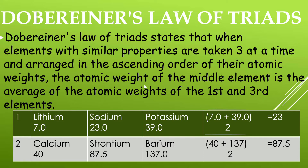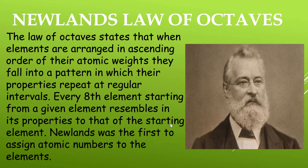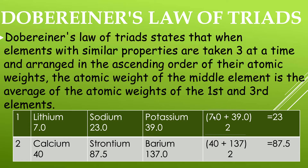The atomic weight of the middle element is the average of the atomic weights of the first and third elements. For example, in the first triad, we have lithium, sodium, and potassium. The atomic weight of lithium is 7 units, sodium is 23 units, and potassium is 39 units. So, if we take the average of the first and third elements — that is (7 + 39) / 2 — we get 23, which is the atomic weight of sodium.